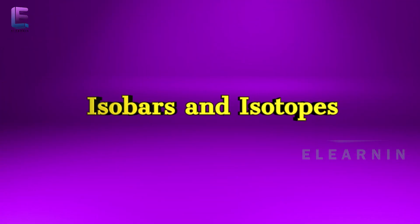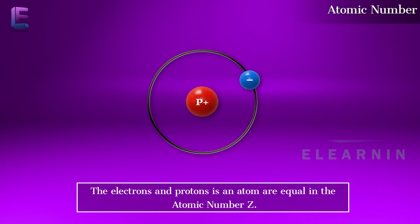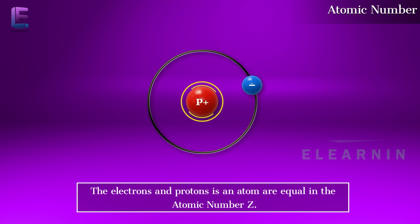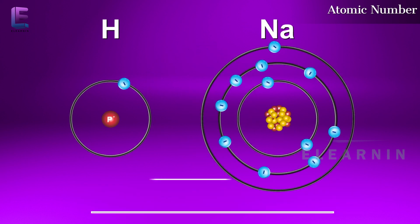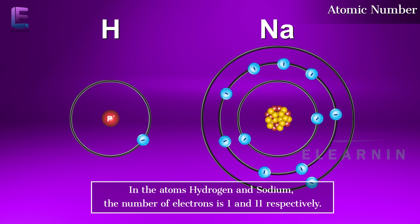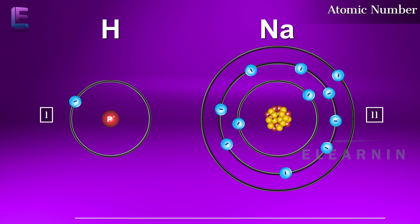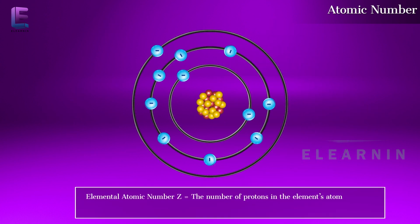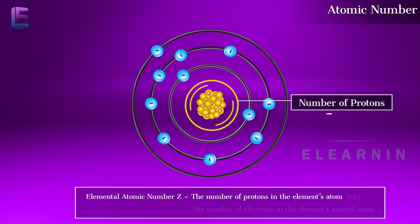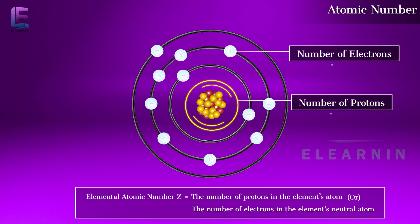Isobars, isotopes, atomic number. The electrons and protons in an atom are equal. The atomic number Z — for example, in hydrogen and sodium the number of electrons is 1 and 11 respectively. The elemental atomic number Z is the number of protons in the element's atom, or the number of electrons in the element's neutral atom.